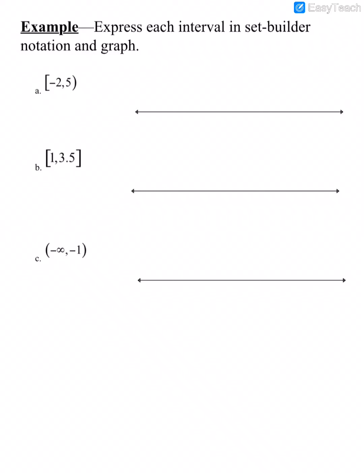Now we're going to express each interval in set builder notation and graph. These intervals are given in interval notation, and I like to graph first and then write the set builder notation. The interval starts at negative 2, and negative 2 is included, so on negative 2 I'm going to put a bracket. It goes to 5; 5 is not included, so I put a parenthesis on 5, and then connect those points.